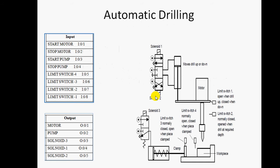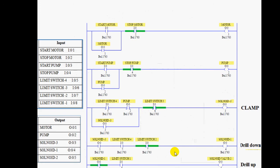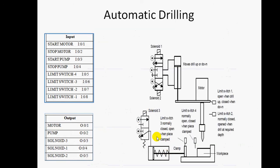First, we discuss automatic drilling. In a conventional drilling machine, the drill moves up and down manually and the clamp is also operated manually. Here we replace this manual method with a pneumatic system. This requires three solenoid valves — solenoid valve one, two, and three. Solenoid valve one is used for drill moves down, solenoid valve two is for drill moves up.